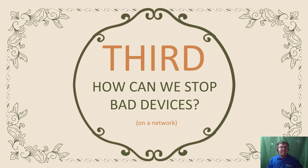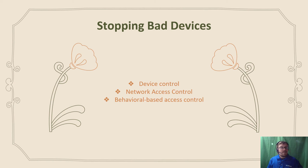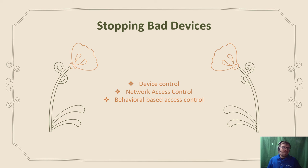The third question we have to ask is: how do we stop these bad devices? There are really three categories. First is device control — meaning these are the only things a device can do when it's on the network. Second is network access control, saying these are the only ways a device can get on the network, related to zero trust network access. Third is behavioral-based access control, where a device is allowed normal access until it starts to misbehave, at which point we change its access procedures according to what it's doing.